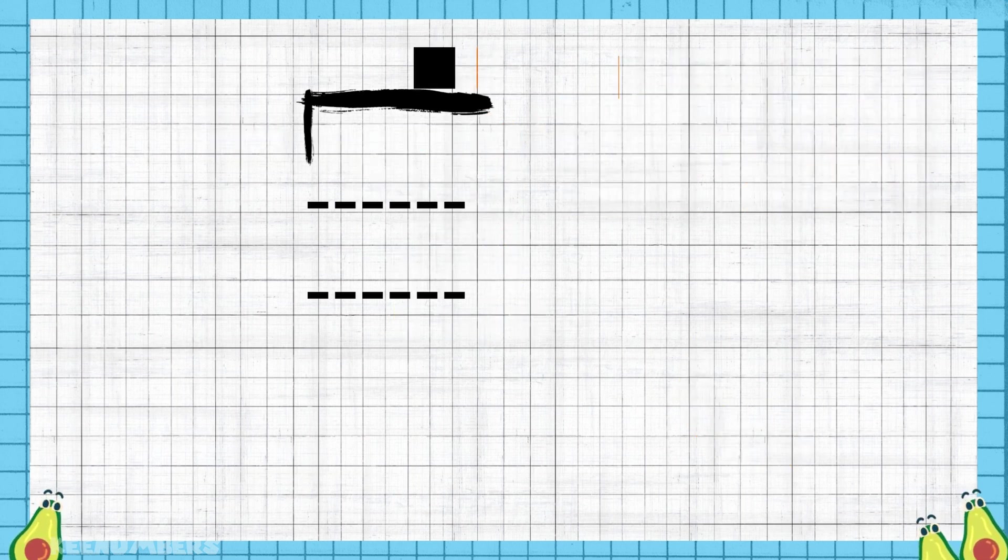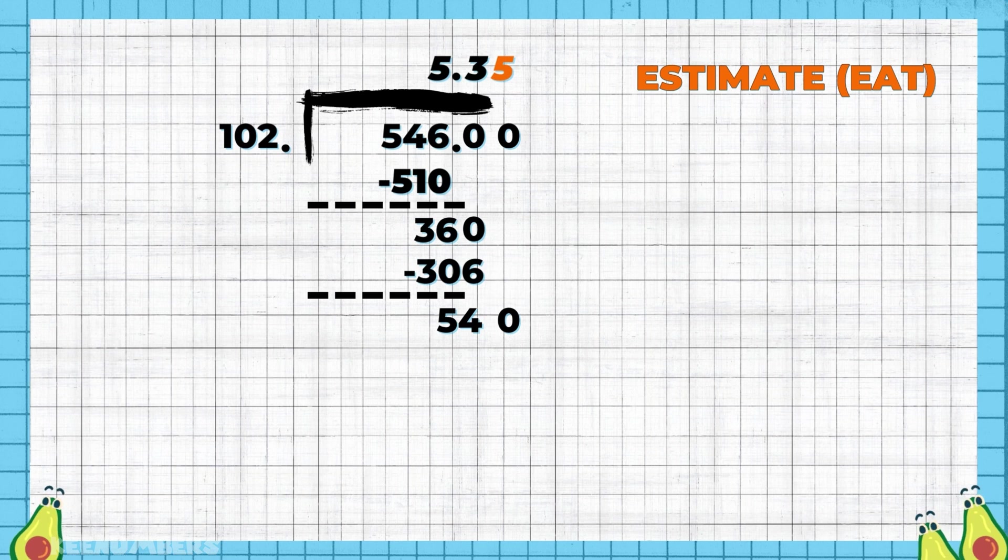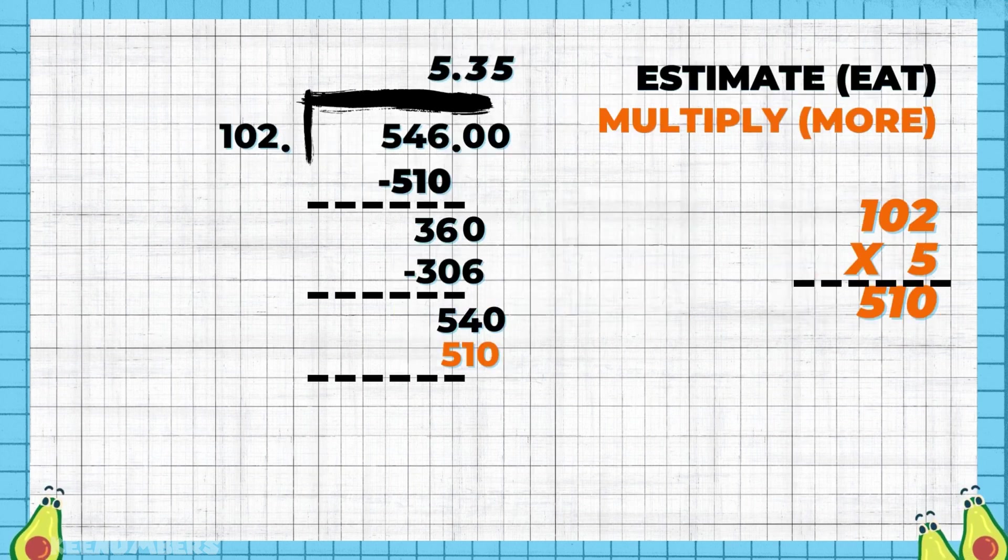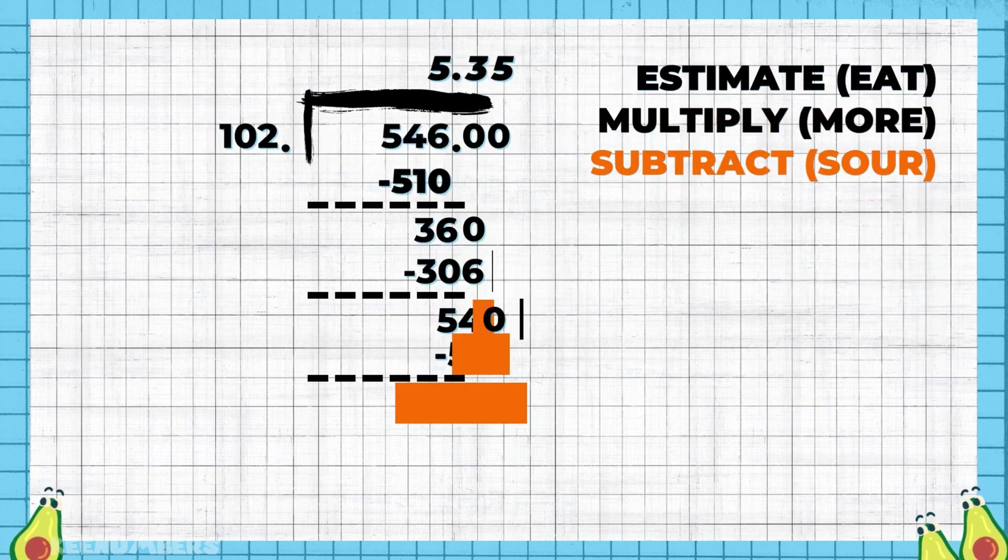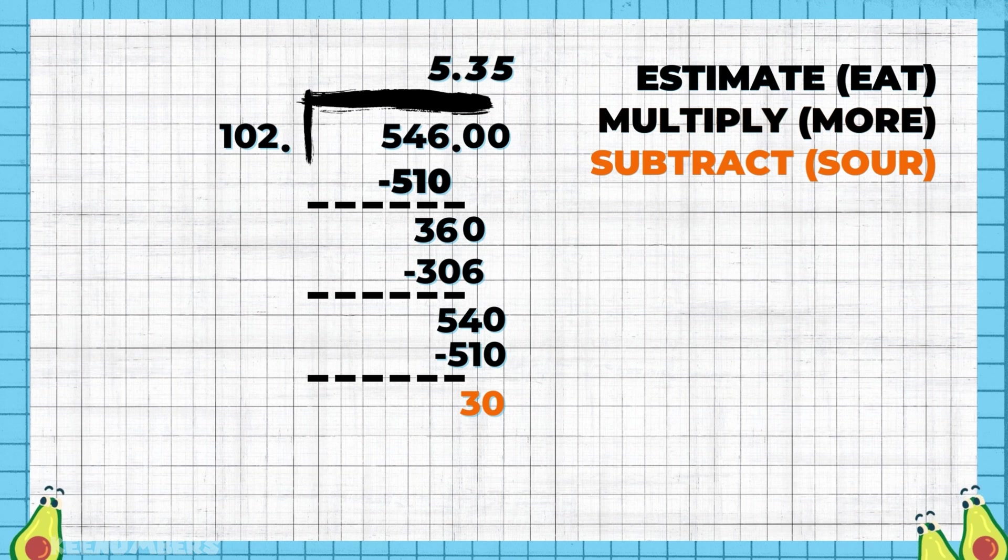Bring down the zero and repeat: estimate. We already established with blocks that 102 times 5 is 510, so the 5 gives us a good estimate. Once we carry out that multiplication, we can move on to the next step of subtracting. Eat more sour. The difference of 540 and 510 is only 30.